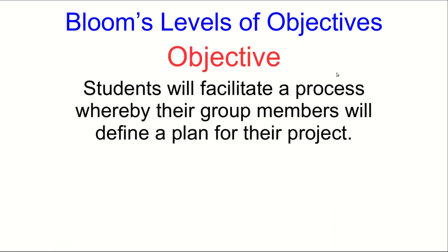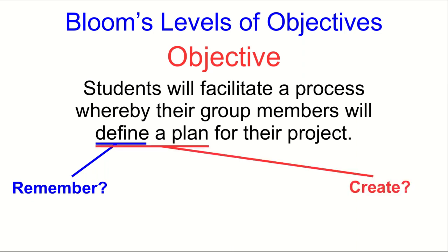Let's look at one more example. Here's the remaining example objective that I gave in Lecture 1, and this is about group work and making a plan for a project. Now, if you just use a keyword list, you might be tricked easily. Define often is on the remember level, but that certainly doesn't seem right. Define a plan could be thought of as make a plan, and so maybe that puts that at create, but that doesn't feel right either, does it?